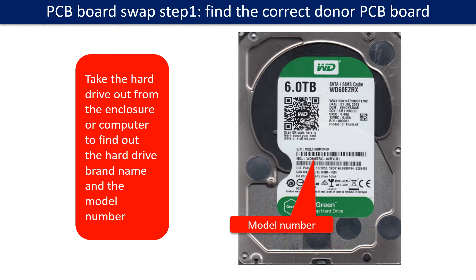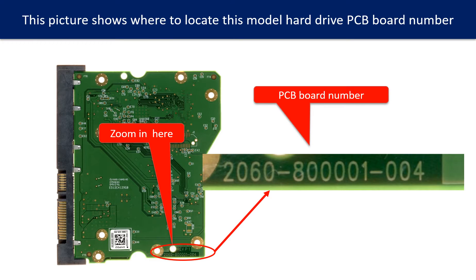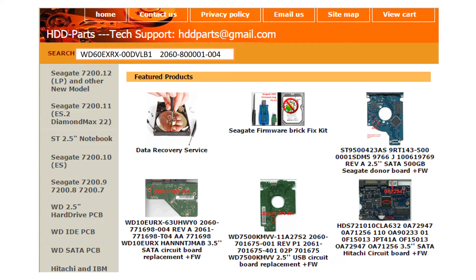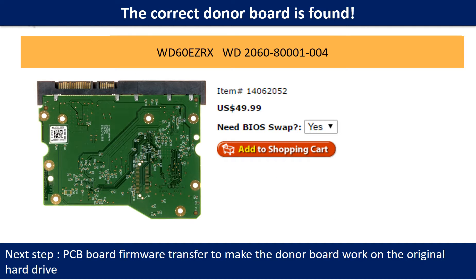PCB board swap step 1: Find the correct donor PCB board. Locate the hard drive model number on the front of the hard drive label, and locate the hard drive PCB board number. Different brand names have different PCB boards, and the PCB board numbers are different. You may go to hdd-parts.com to check out other brand name PCB board numbers. After finding the hard drive model number and PCB board number, use them as a reference to search for the correct donor board. We found the correct donor PCB board, but this is only the first step.